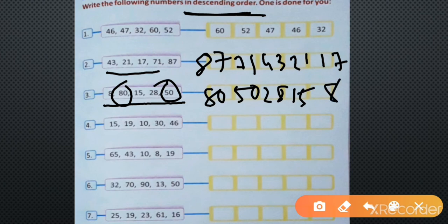Number 4: 15, 19, 10, 30, 46. Which one is biggest? 46. So write 46 in the first box, then 30, then 19, then 15, and 10 in the last box. Okay. So now the numbers are arranged in descending order.